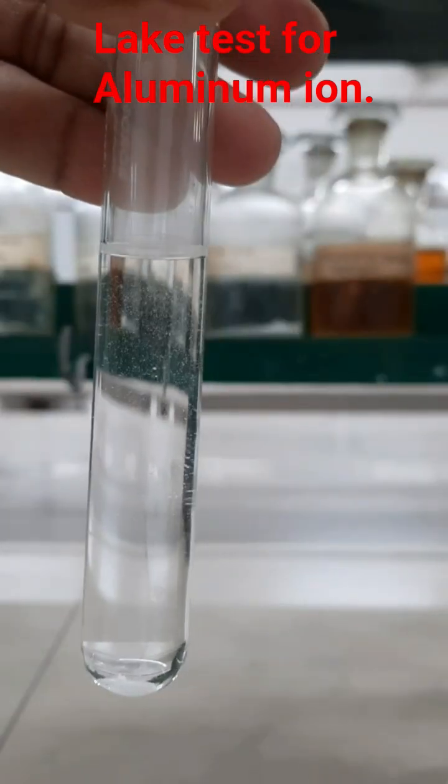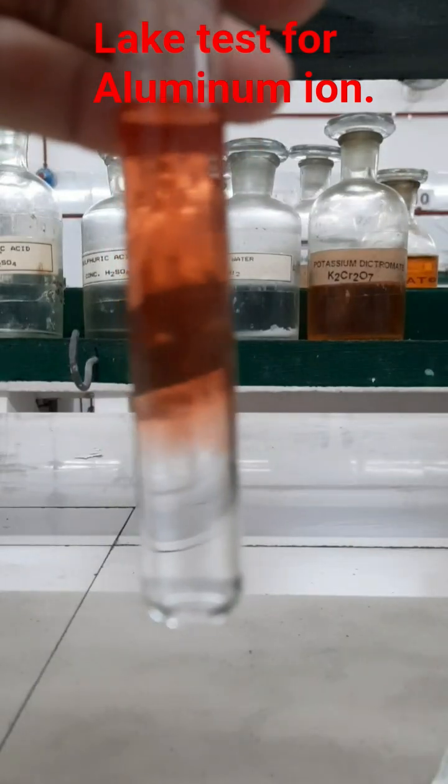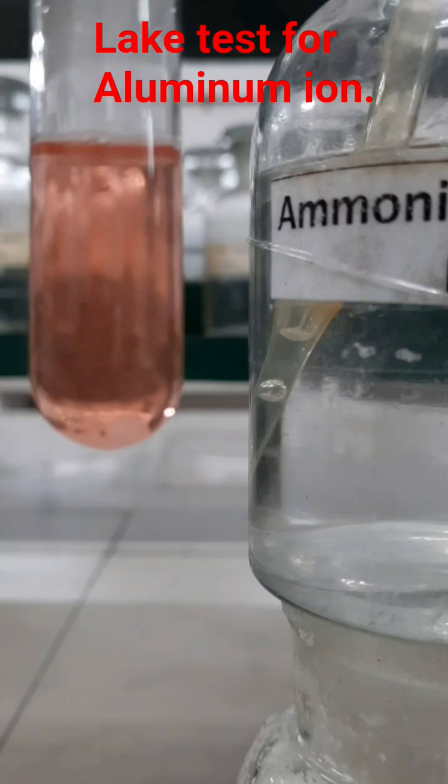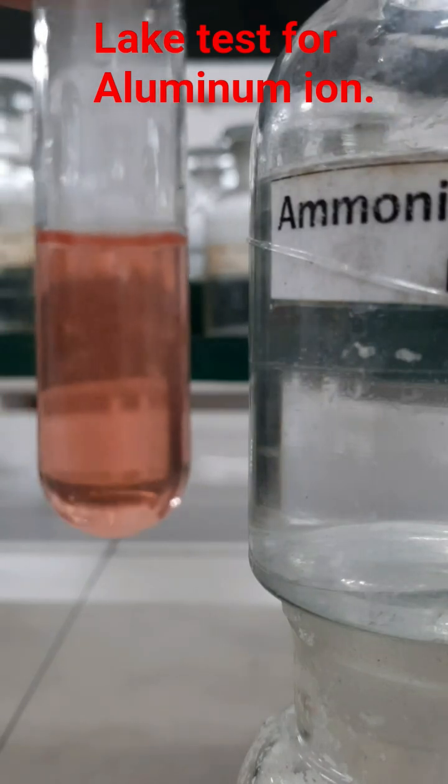Here is the blue litmus solution. I am adding a few drops of blue litmus solution into it and the color of the dye turns red. Now take a small amount of this mixture and then add ammonium hydroxide solution into it.